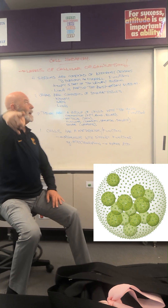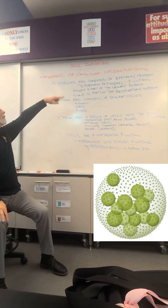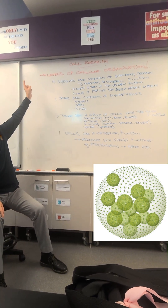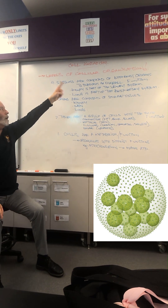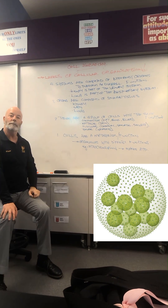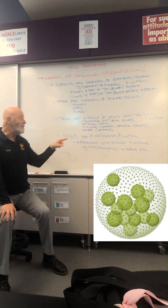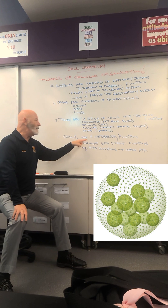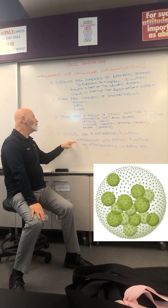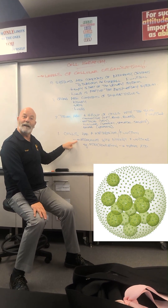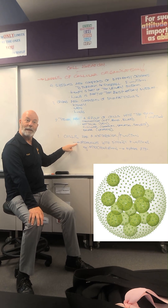Okay, today we're doing the cell hierarchy, otherwise known as the levels of cellular organization. Number one is cells — all cells have their own metabolism or function, and all cells have a function dependent upon the organelles they possess.